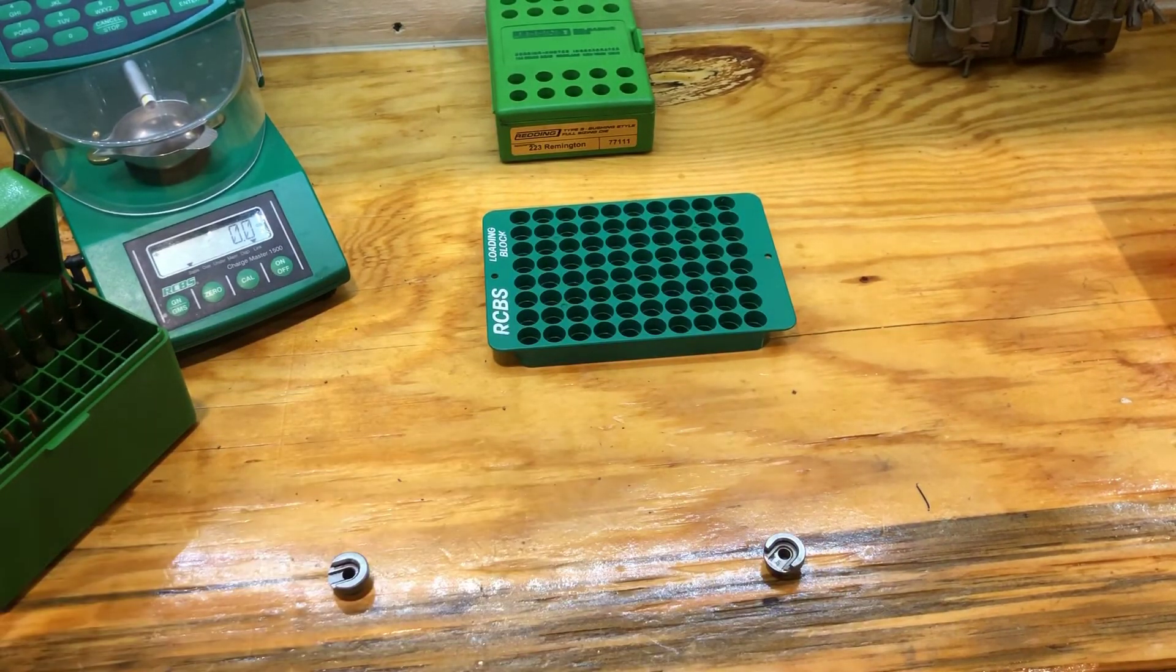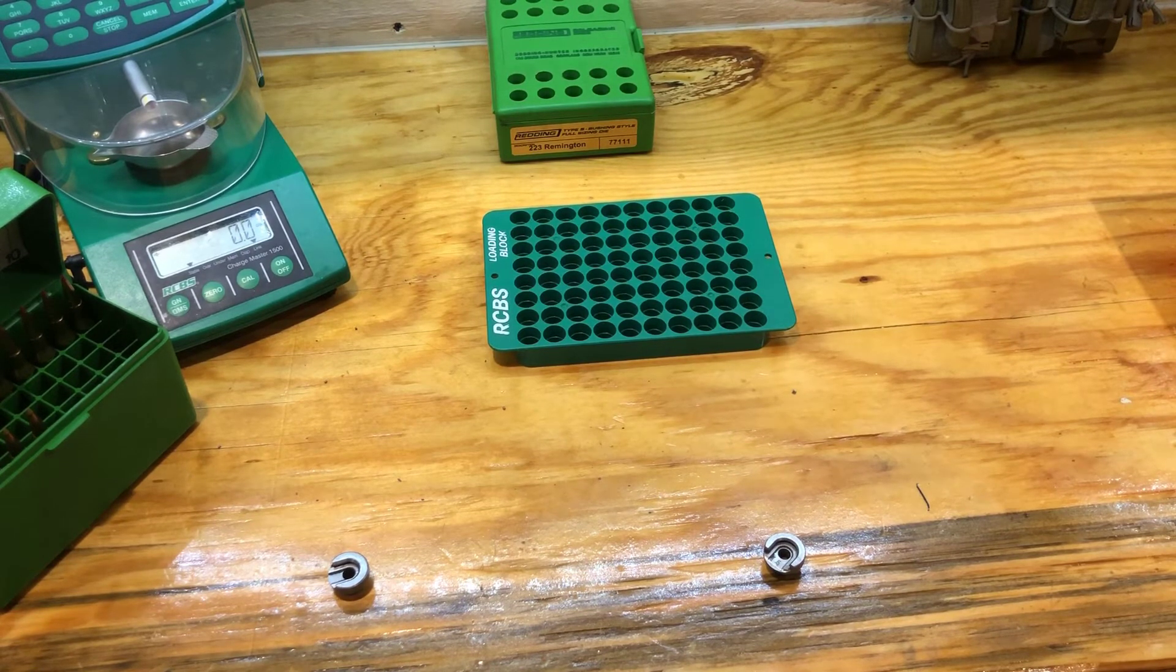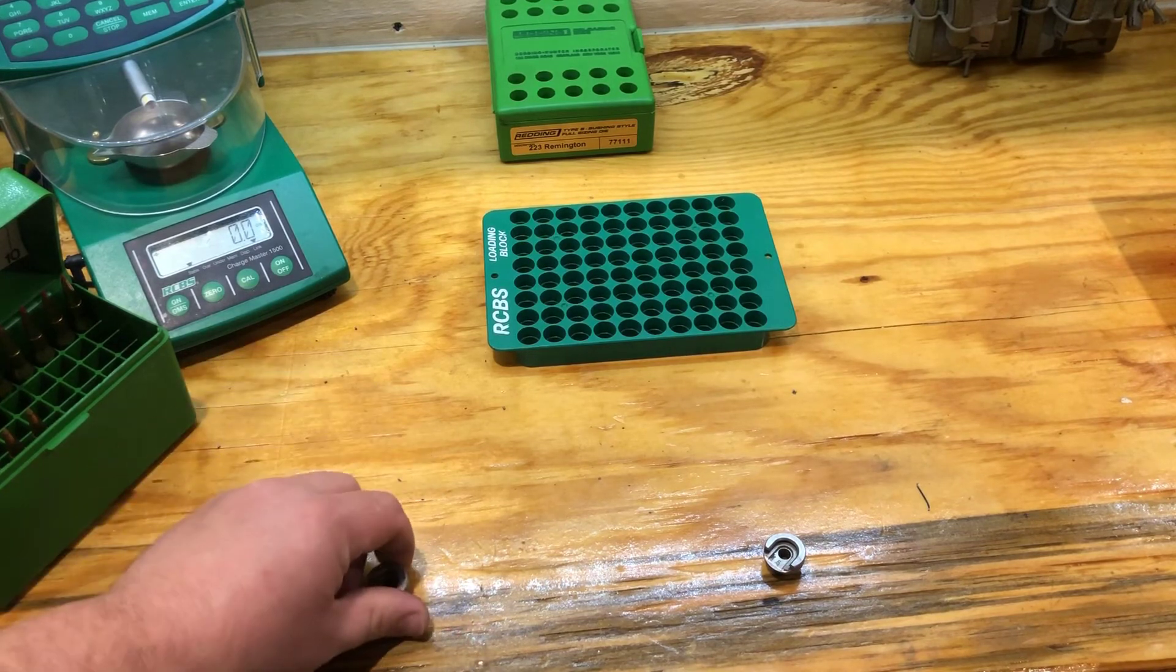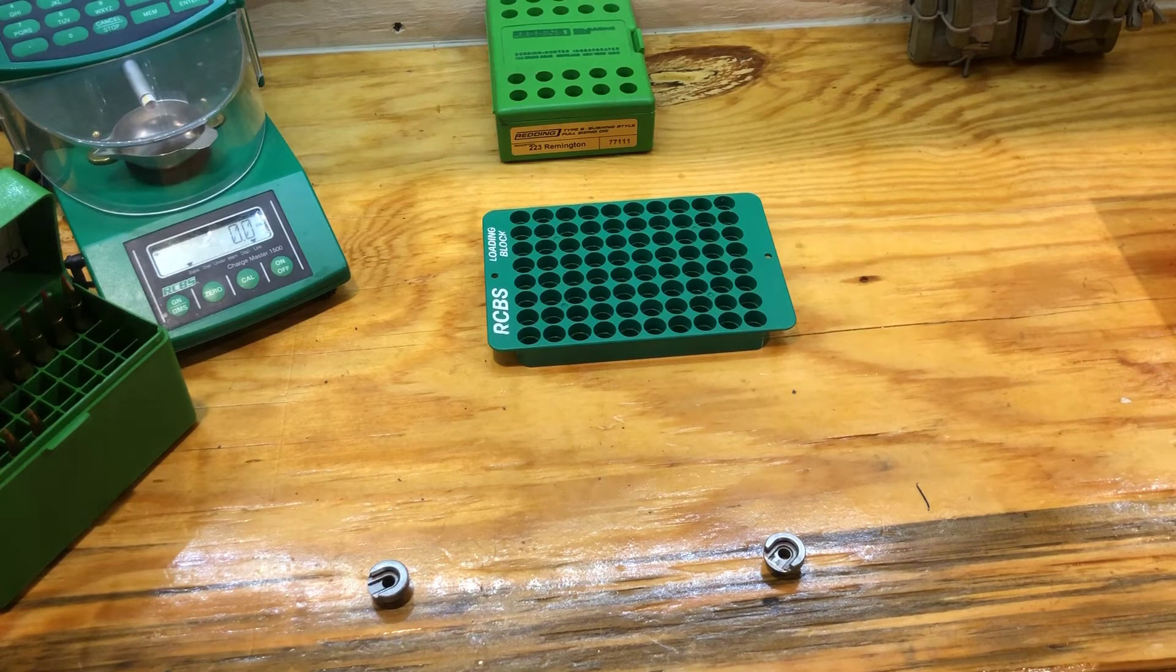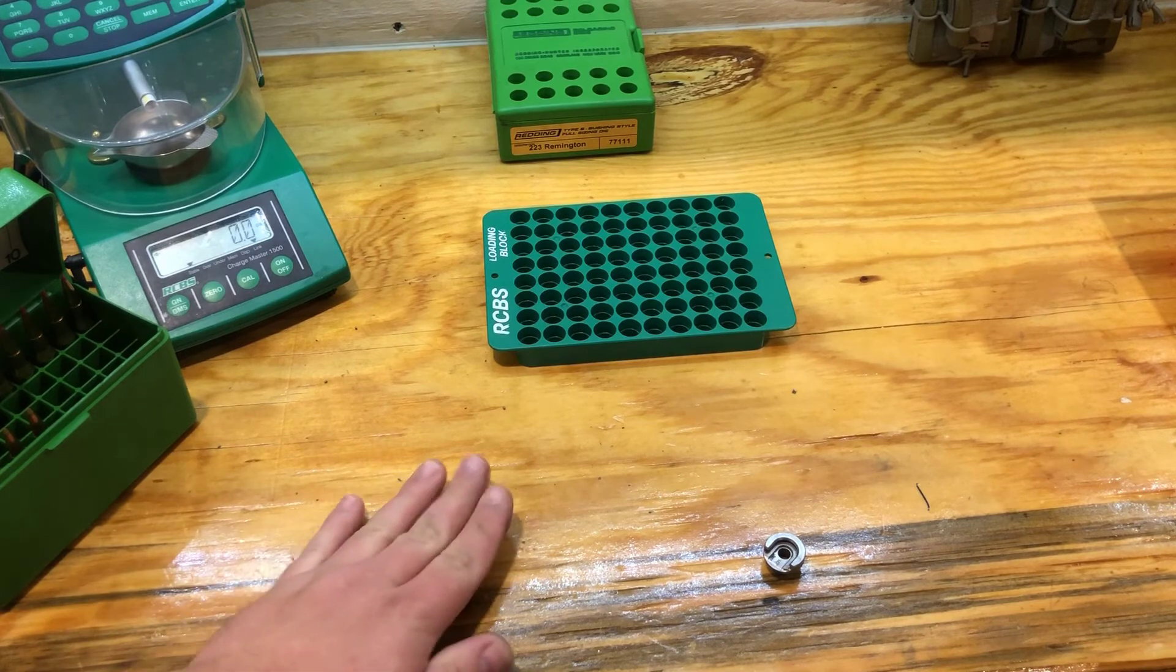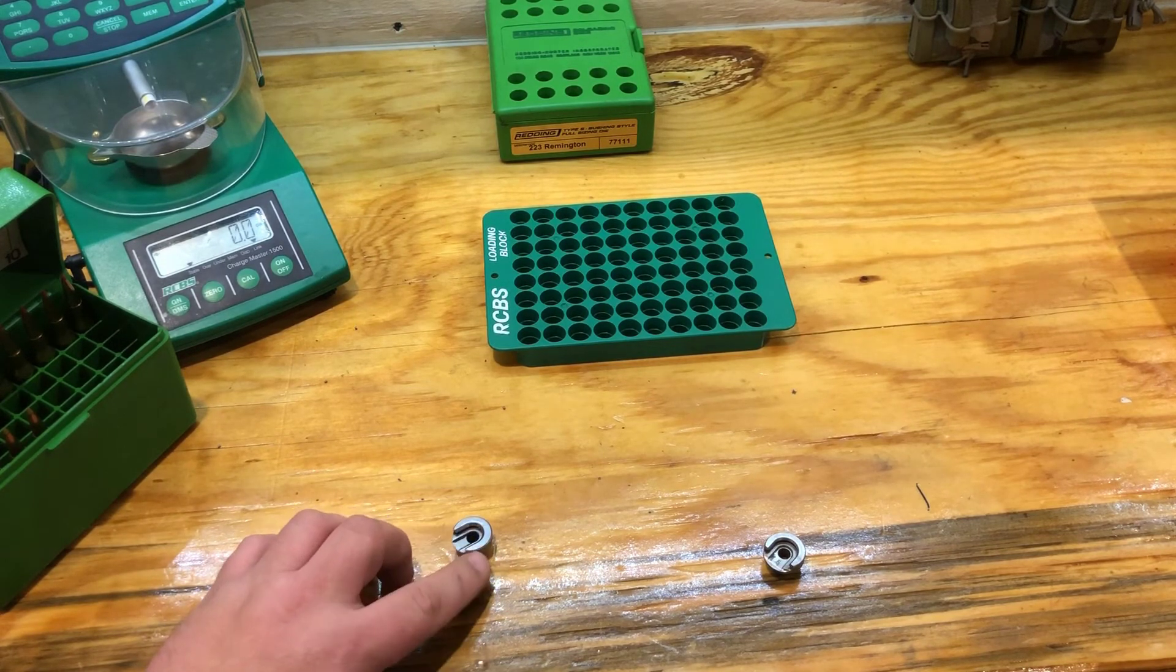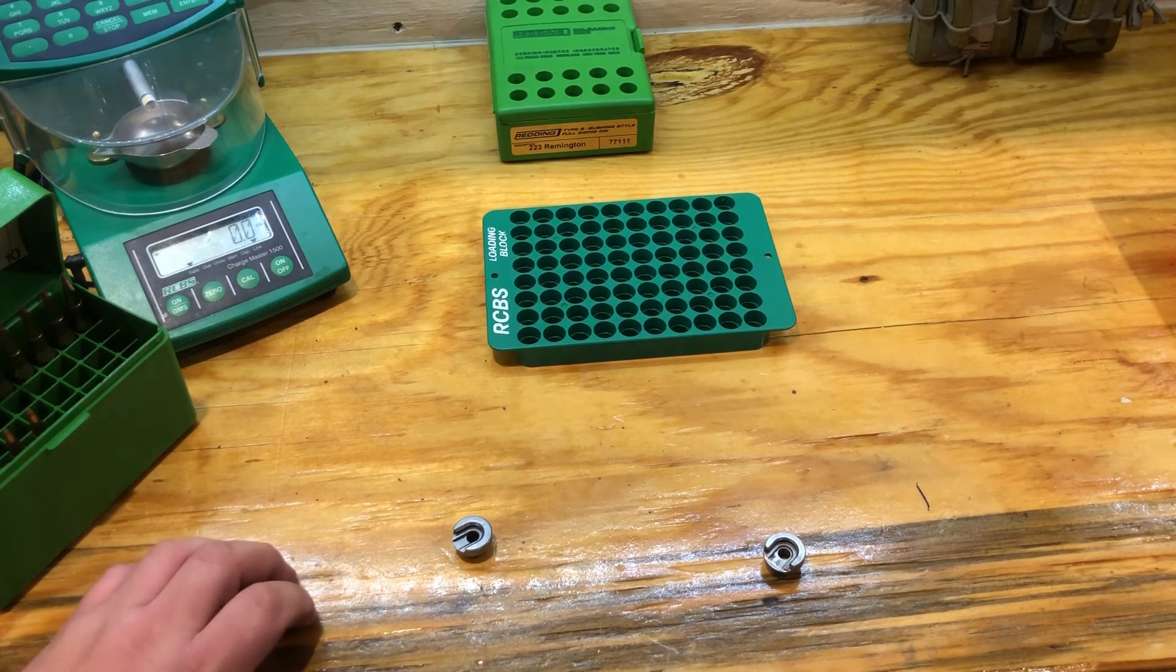So two identical shell holders, same size cartridge. They're actually the same manufacturer, several years apart. But there's six thousandths, nearly six thousandths of difference in them. So that die is actually being screwed down to contact with this. So if one of these is thicker than the other one, you've got less setback.